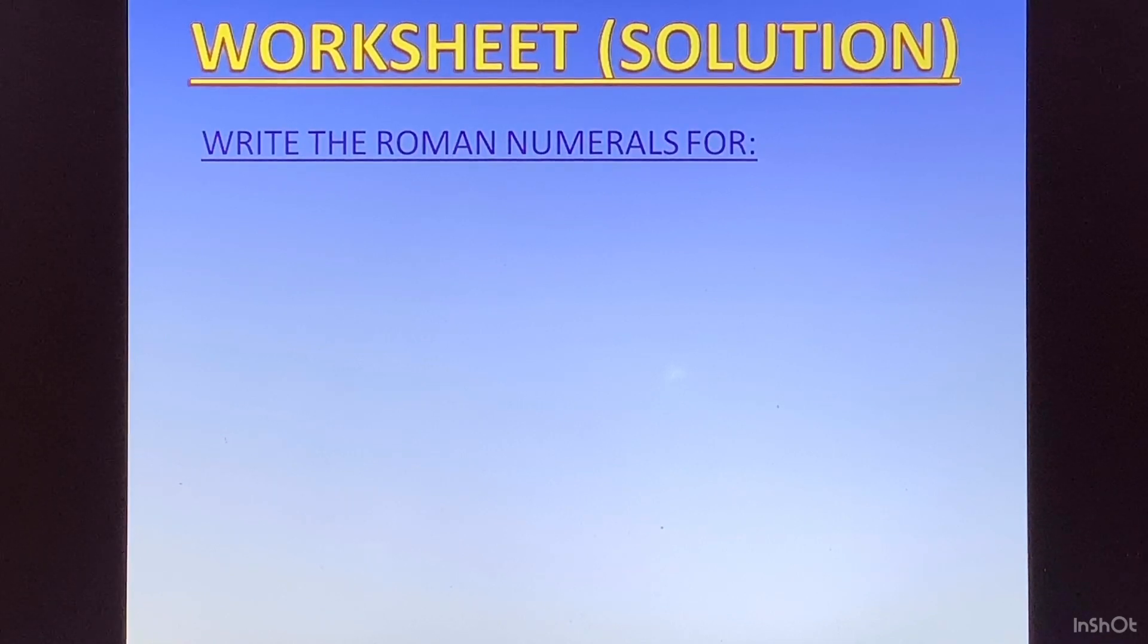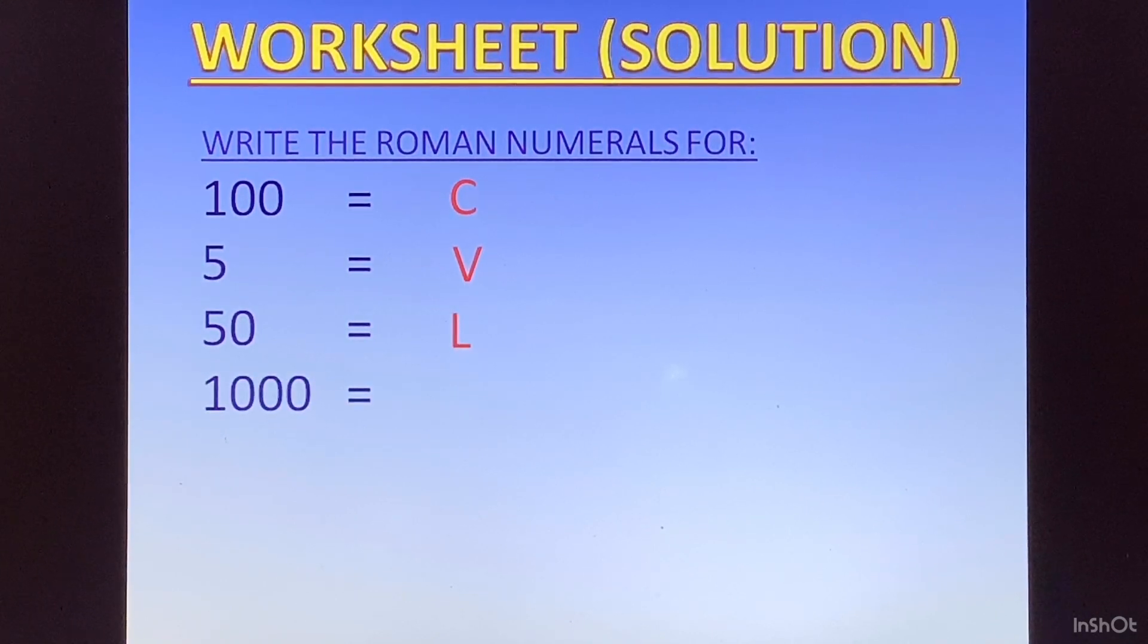Let's go to the next question. Write the Roman numerals for: First one was hundred which is C, five is V, fifty is L, one thousand is M, one is I, ten is X, five hundred is D. Here again we have seven parts. If you got all seven correct, give yourself seven marks. One mark for each correct answer.